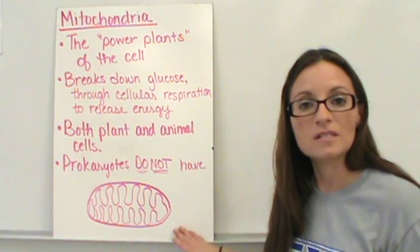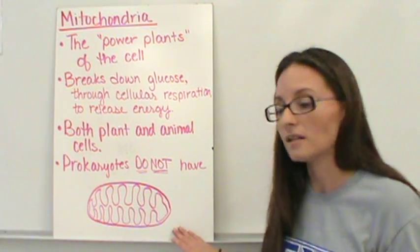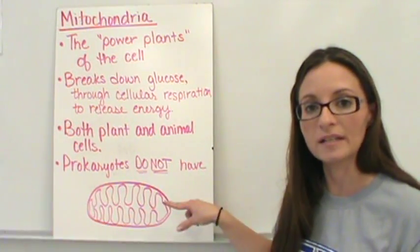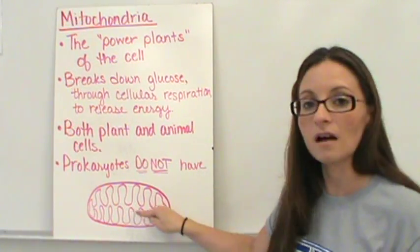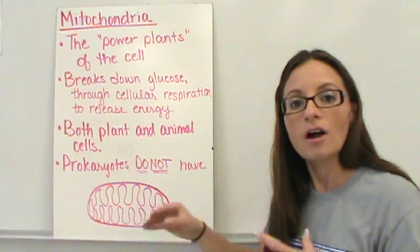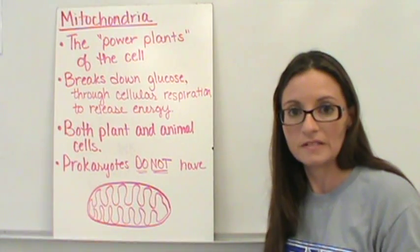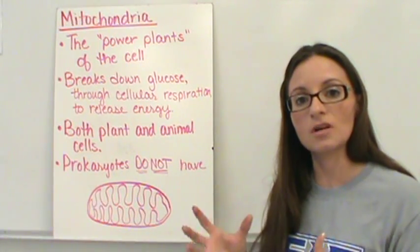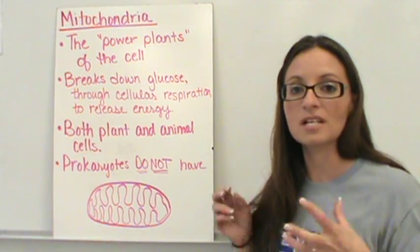A mitochondria is also a double-membraned organelle. You'll see here we have an outer membrane, and then the inner membrane has lots of folds to it. And all those folds that we have are going to help increase the surface area to help us go through the process of cellular respiration even faster.